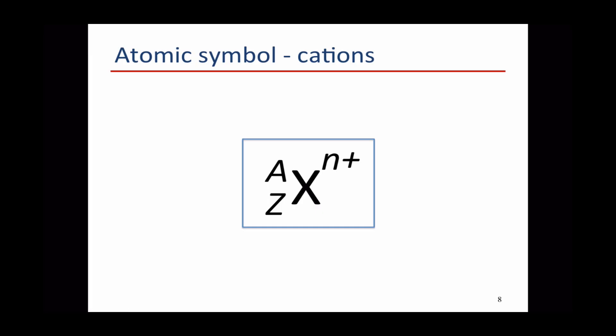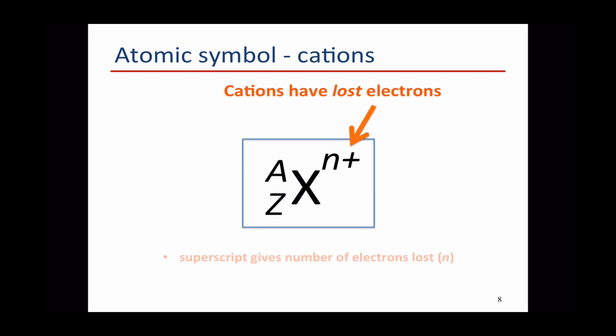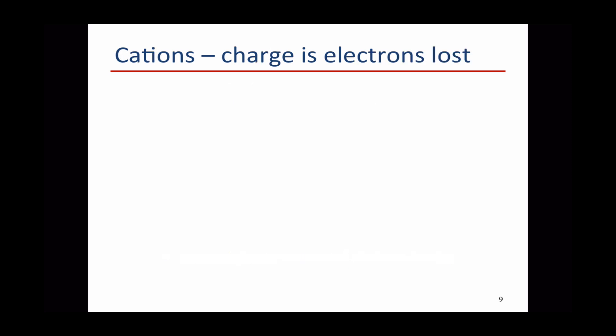Atoms can also lose or gain electrons to become negatively charged or positively charged. If they lose electrons, they've now got more protons than electrons, and so they have a positive charge. We show this on the atomic symbol on the right-hand side. The positive sign means it's lost electrons, and the number tells us how many electrons it's lost. So a cation such as H+ has lost an electron — instead of writing 1+ or +1, we just put a positive sign when only one electron is lost.